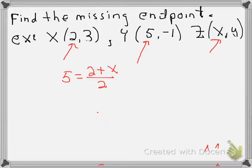The same thing is true for the Y coordinates. Negative 1, the Y coordinate of the midpoint, is the average of 3 and Y, the Y coordinates of the endpoints.